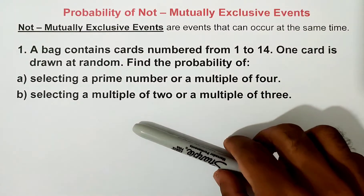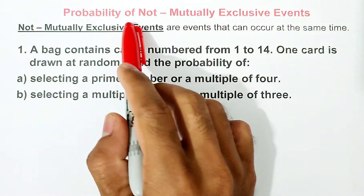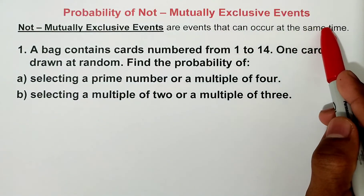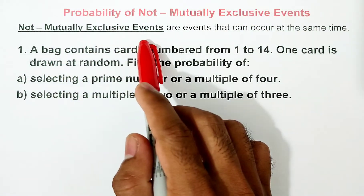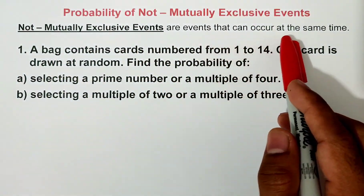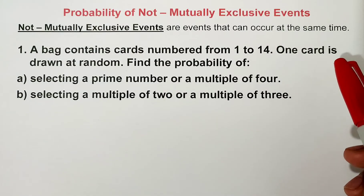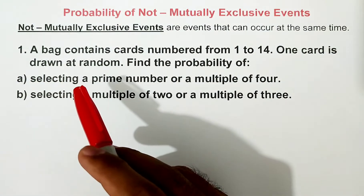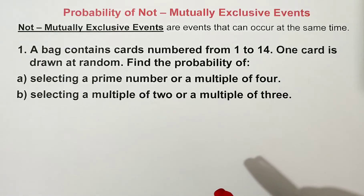Hello everyone. In this video we will talk about probability of not mutually exclusive events. Not mutually exclusive events are events that occur at the same time — they have values in common, or they have intersection.